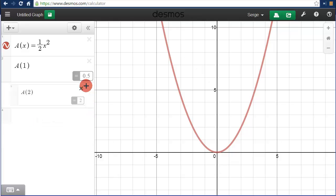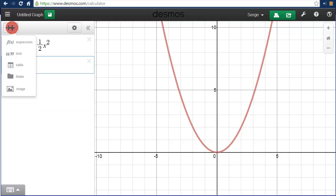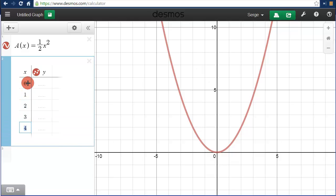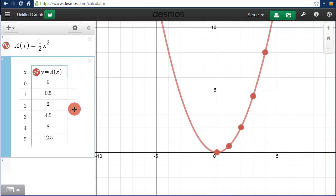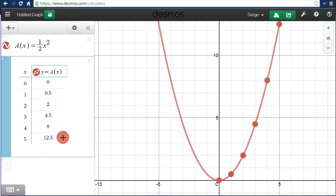But Desmos can do even better than that. Instead, I'm going to come over here and add a table. And I'm going to pick several different x values, maybe 0, 1, 2, 3, 4, 5. And the y values, the output values, I'm going to let y equal a of x. And just like that, the column fills in, and we get the values for our table.